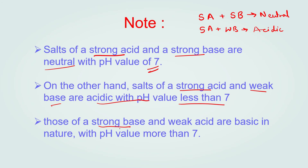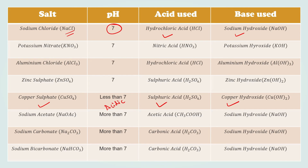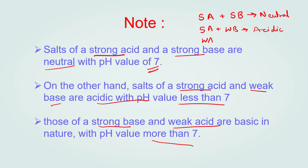If we take a strong base and a weak acid, the salt obtained is basic in nature with a pH value of more than 7. For example, acetic acid is a weak acid and sodium hydroxide is a strong base; the salt produced is sodium acetate with a pH more than 7, meaning it is basic. Weak acid plus strong base gives a salt whose nature is basic.